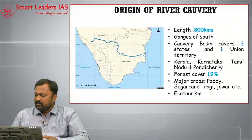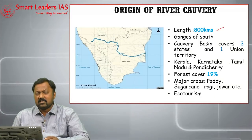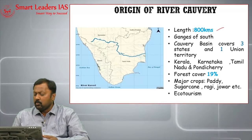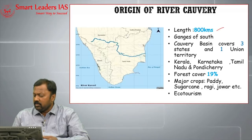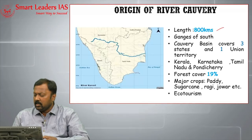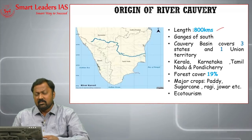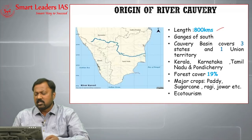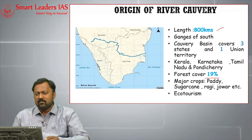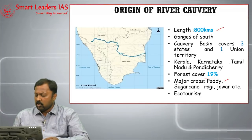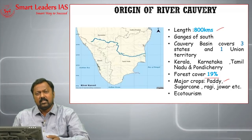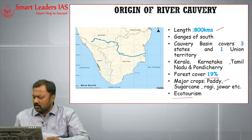The length of the river is 800 km. The Cauvery River is considered the Ganges of the South. The Cauvery Basin covers three states — Kerala, Karnataka, and Tamil Nadu — and one Union Territory, Pondicherry. This river basin has a forest cover of approximately 19%. The major crops cultivated in the basin include paddy, sugarcane, ragi, and jowar. The river basin is also used for ecotourism activities in modern times.